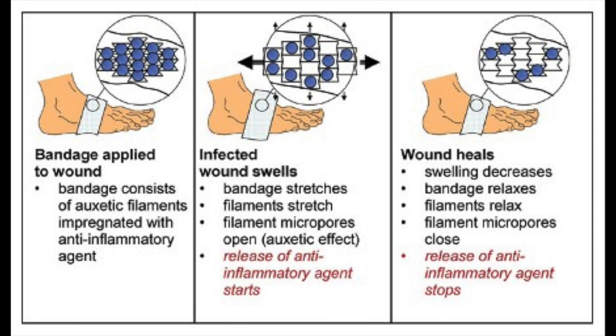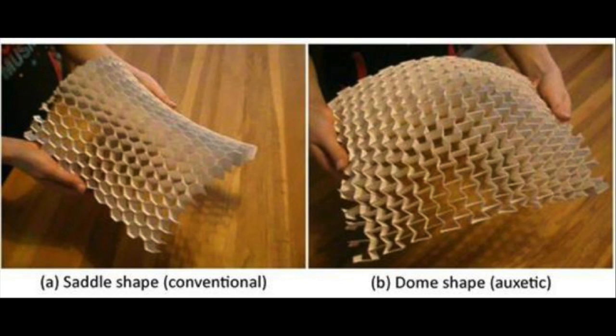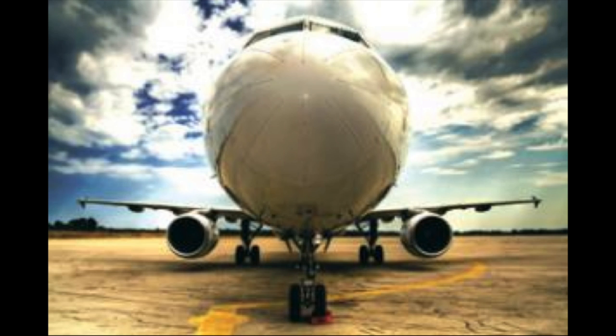The unique bending characteristic of auxetic materials, where a convex dome shape is created rather than a saddle shape, could also be useful for practical applications. One way they are being tested for implementation is in the conical frontal area of airplanes. Another airplane application is during cargo drops due to the increased energy absorption properties of auxetics.